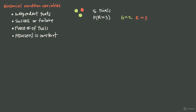Before we go forward, let's confirm this is a binomial random variable. The first criterion is independent trials. What we're doing is pulling a marble out of the bag, writing down the color, putting the marble back, shaking the bag, and pulling another one out. The marble pulled the first time isn't going to affect the marble pulled the second or third time because we're always returning it. So the outcome of each trial will not affect any other trial — we have independent trials.